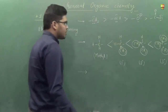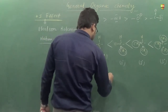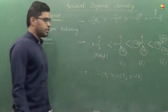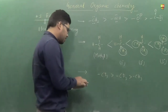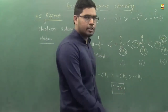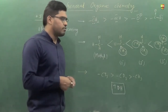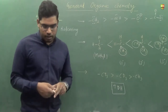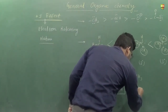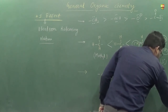One more important thing: isotopes of hydrogen — tritium (T), deuterium (D), and protium (H). The order of electron-releasing nature for the corresponding methyl groups is: CT3 > CD3 > CH3. This is a very important example to remember. Conversely, the bond length order is reversed: C–H bond length is maximum, then C–D, and C–T is minimum.